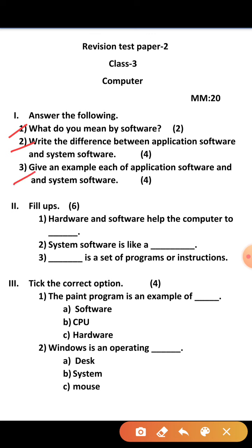Third, give an example each of application software and system software. Write one example each. This question is also four marks. Second, fill-ups, that is of six marks, two marks each. First, hardware and software help the computer to dash.